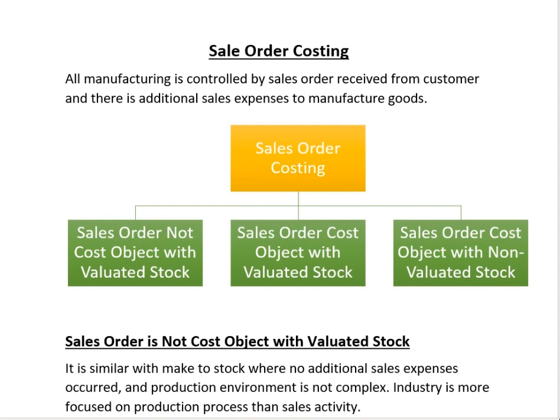First the sale order is received from the customer, and after that we start the manufacturing. It is not like FMCGs where they produce goods and store them in warehouses — we are more focused on customer satisfaction. Sale order costing is basically divided into three parts: first is when the sale order is not a cost object and stock is valued at standard; second is when the sale order is a cost object and stock is valued at standard.